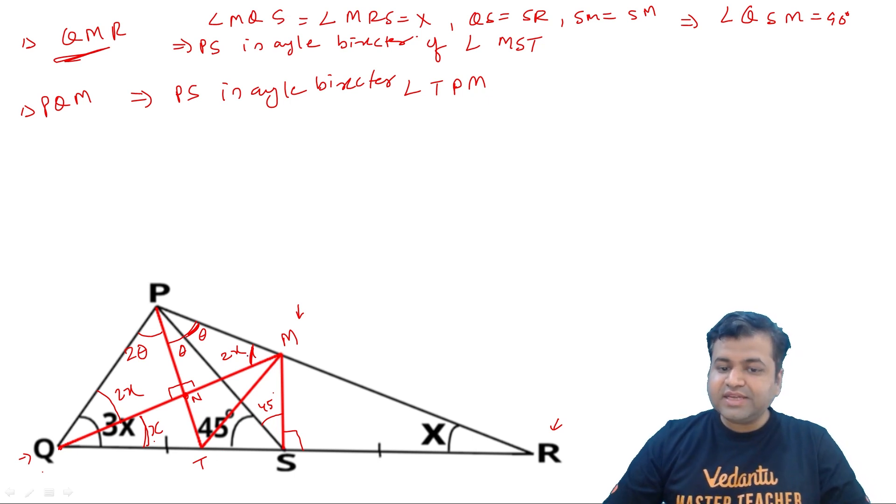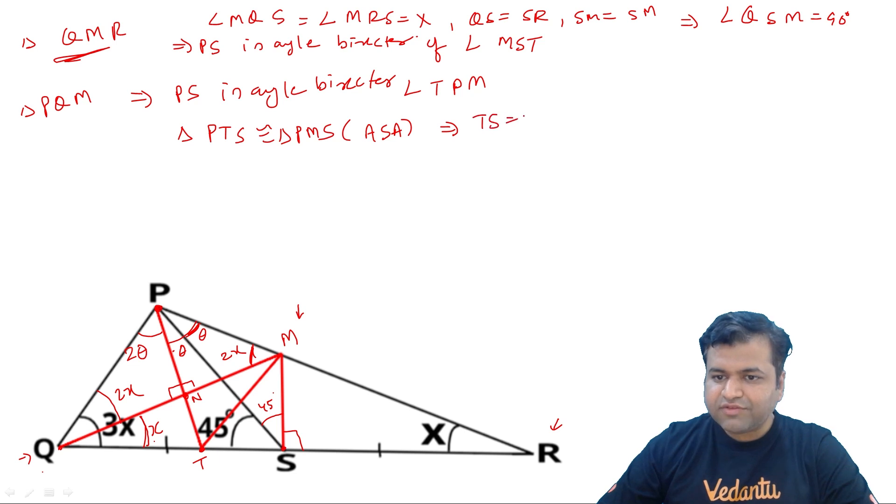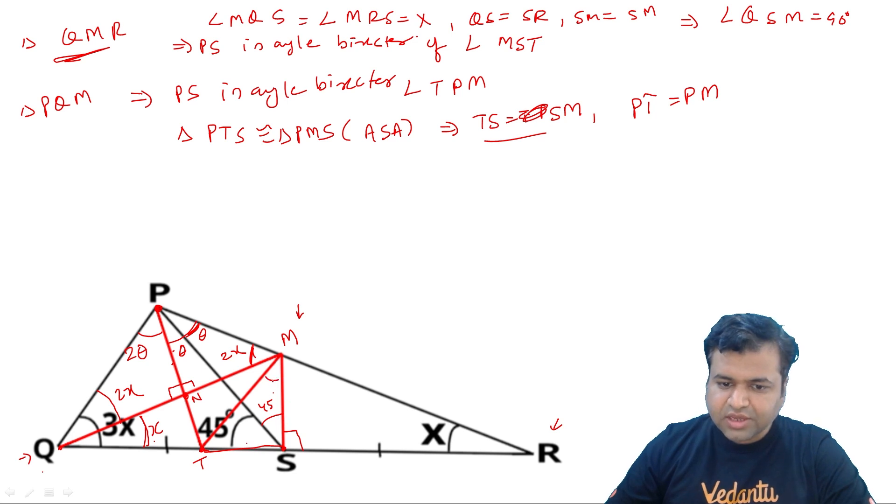To yahaan se aadha aapko samajh mein aayega, triangle PTS, PTS yeh wali, that will actually be congruent with PMS. Kyun? Bhai dekho na, do angles equal hai, theta theta, 45 45, or PS congruent hai. To angle side angle ki wajah se both triangles will be congruent. To isse kya mila hai? Isse hain do cheeze mili. Ek to jo TS hai, that will be equal to SM. TS will be equal to SM, ek cheez to yeh mili. Doosra mujhe mila, PT is equals to PM. PT jo hai vo PM ke equal hoga. To iska matlab yeh hua ki bhai, or yeh wala angle, TS equal to SM. TS agar SM ke equal hai, yeh pura angle 90 tha, to yeh bhi 45, yeh itna sa bhi 45. Yeh dono angles 45 ho jaenge.